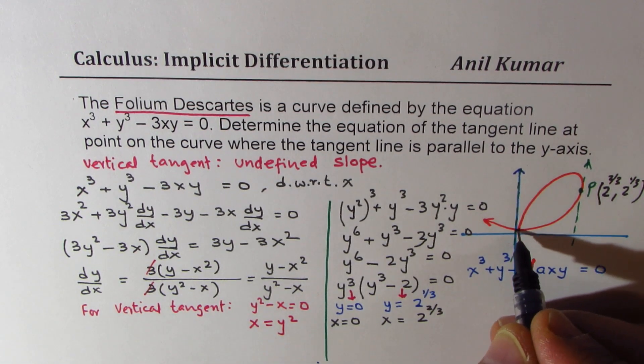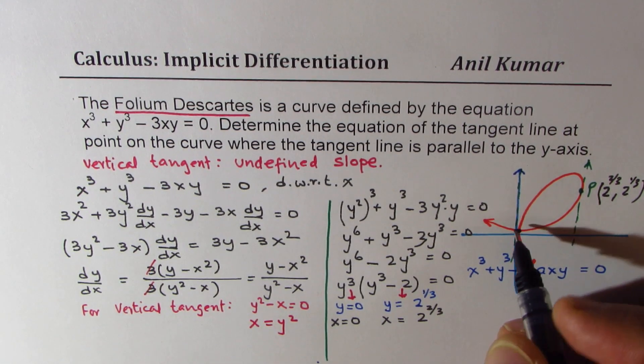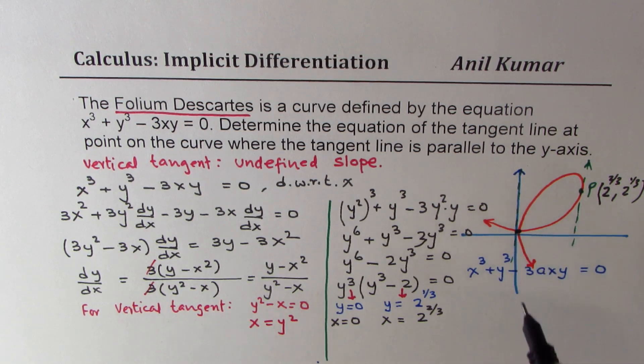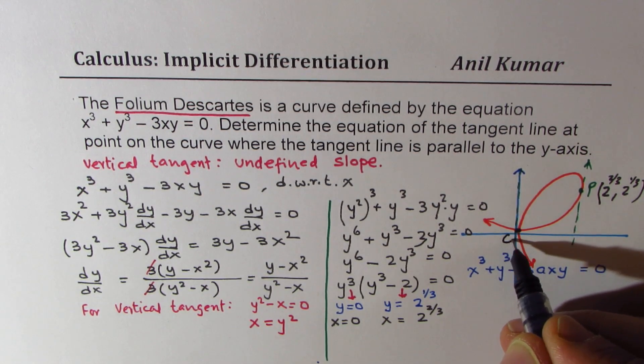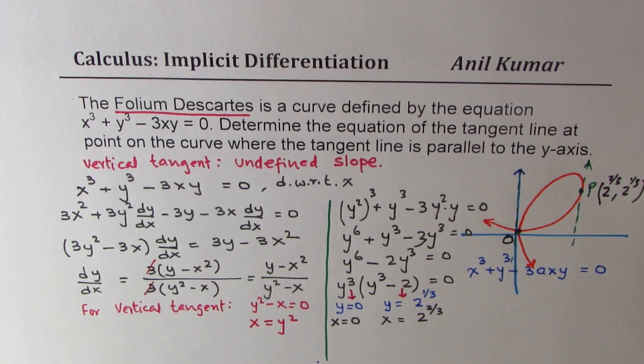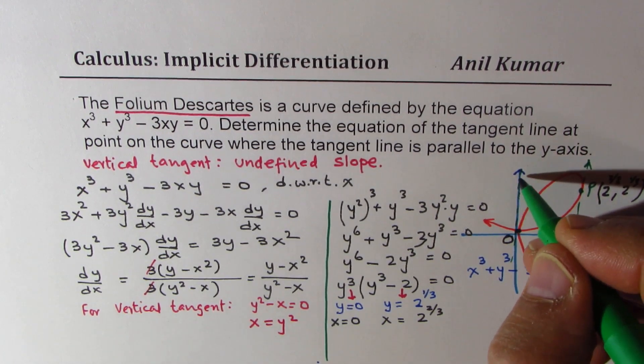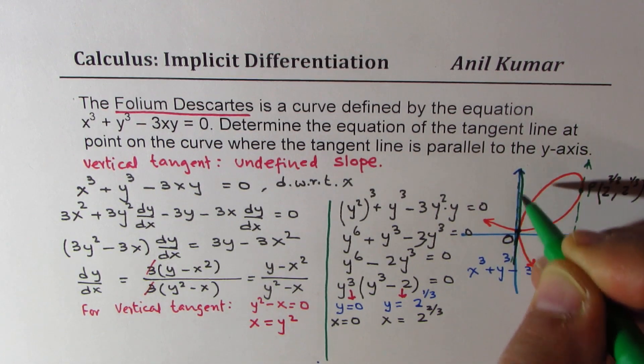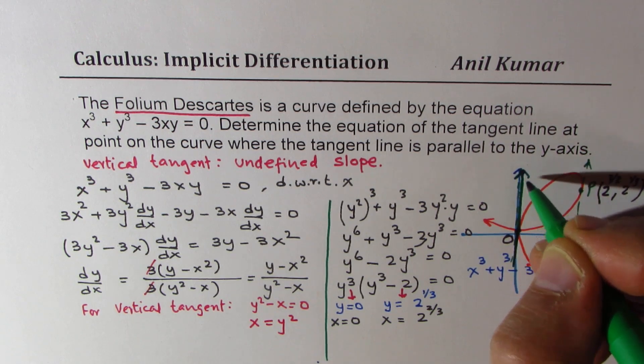And the other point is at the origin, so this point basically is at the origin, so this is not very accurate, this is at 0 itself. So we have two tangents, one of them is the y-axis itself, so let me make it a bolder one.